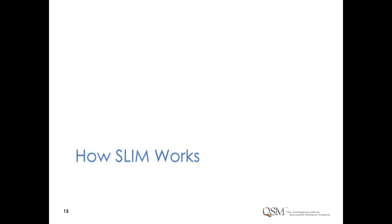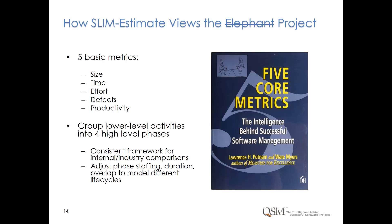SLIM's top-down approach models any development project type and methodology by using two high-level building blocks, five core metrics, and four lifecycle phases. Core metrics create a common language and frame of reference. Consistent measurement and comparisons require consistent definitions. Focusing on summary-level metrics decreases the cost of measurement and promotes industry and internal comparisons. Simple high-level metrics are better matched for what we know or can estimate early on when estimates are typically performed.